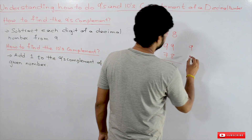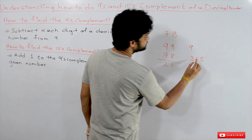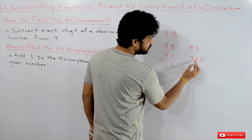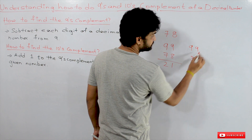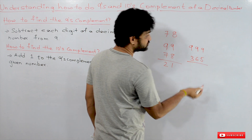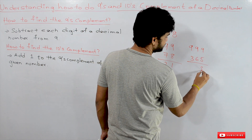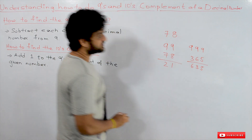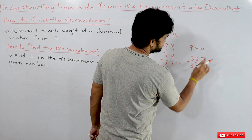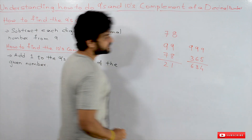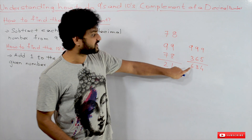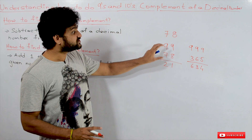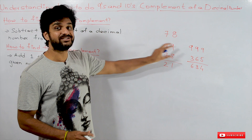For example, if you have 365, how to find the 9th complement of 365: subtract every digit from 9. So 9 minus 3 is 6, 9 minus 6 is 3, and 9 minus 5 is 4. So the 9th complement of 365 is 634.